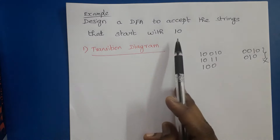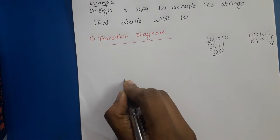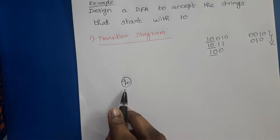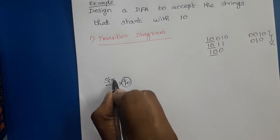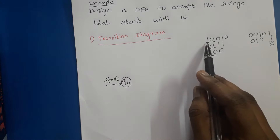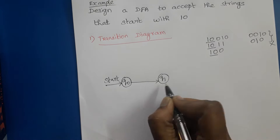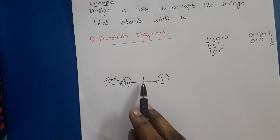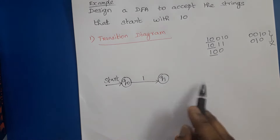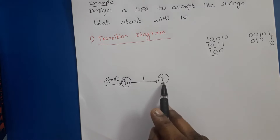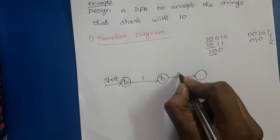For the transition diagram, all strings that start with 10 must be accepted. We start with state q0 as the start state. In a transition diagram, the start state is represented with an arrow labeled 'start'. Since the string must start with 1, we draw an arc from q0 to q1 labeled by 1. If the first input symbol is 1, the transition moves to q1. Then the next input symbol must be 0, so from q1 to q2 draw an arc labeled by 0.